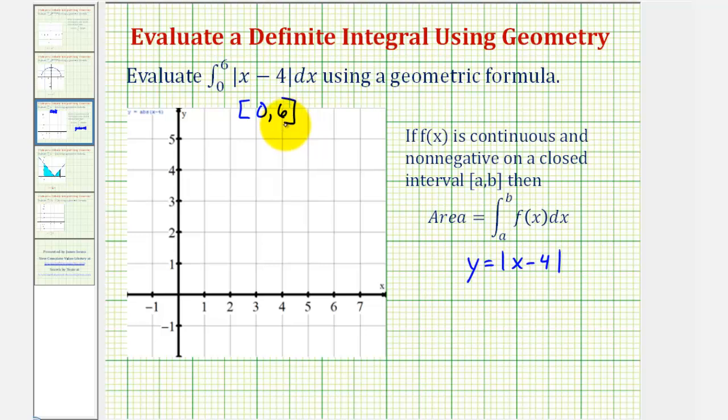and then find the area below the function and above the x-axis, it will equal this definite integral. So let's focus on graphing this absolute value function. We should recognize this will make a v-shaped graph, and the v will open up.